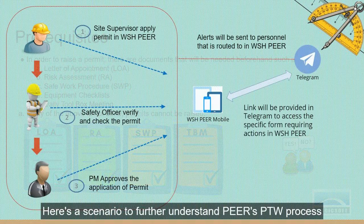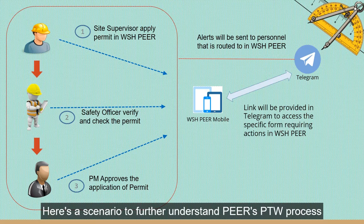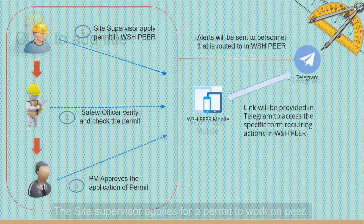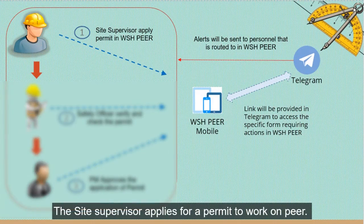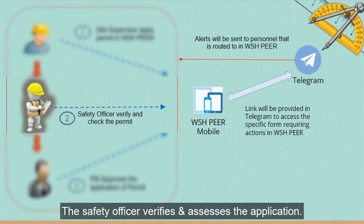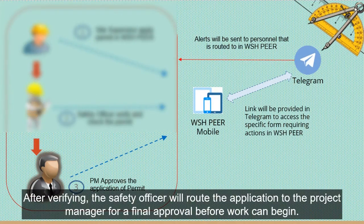Here's a scenario to further understand Peer's PTW process. The site supervisor applies for a permit to work on Peer. The safety officer verifies and assesses the application, then routes it to the project manager for a final approval before work can begin.